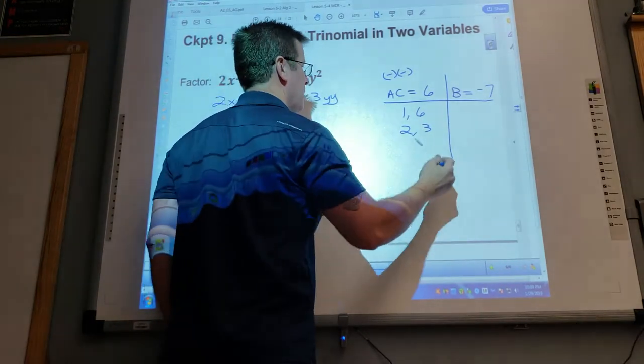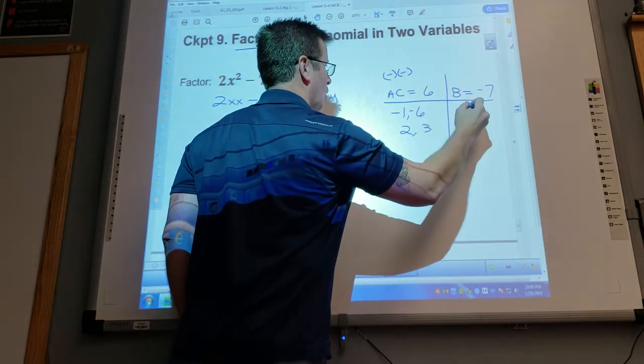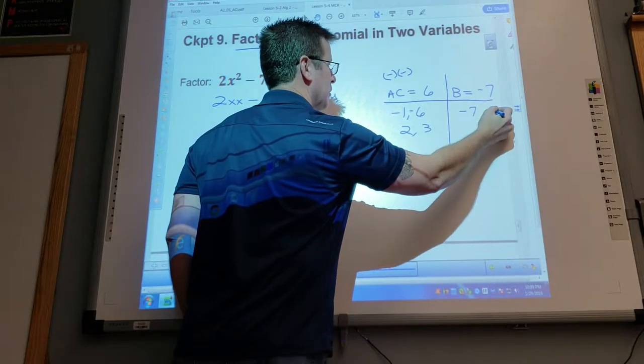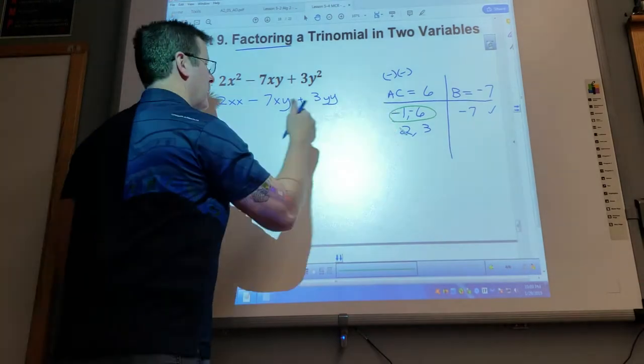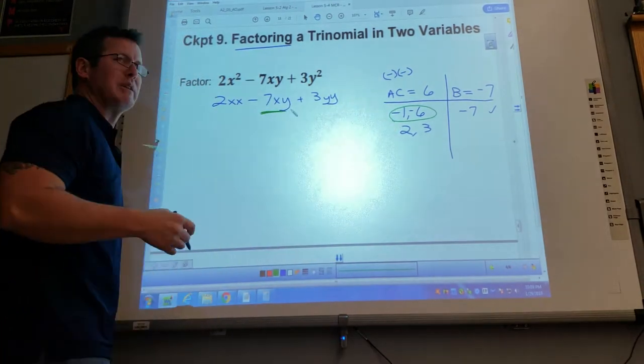Not a whole lot of writing there, but you know what? They both have to be negative in order for this to add to a negative and multiply to a positive. What am I going to do with these two beauties? Well, we're going to use that to rewrite this B term.